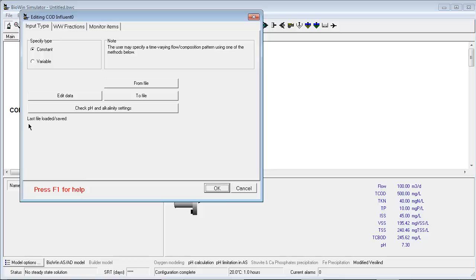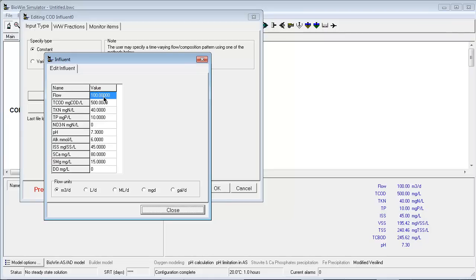The next step in constructing a model is inputting information for parameters such as flow and concentration of the influent.